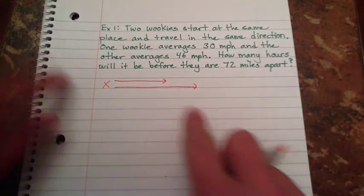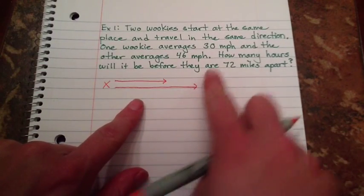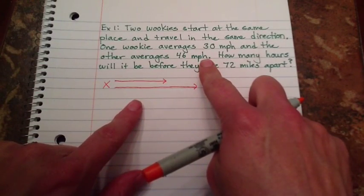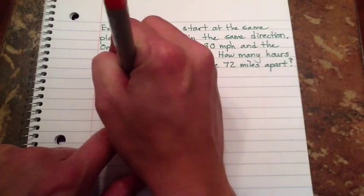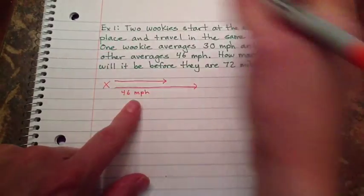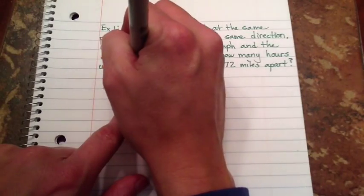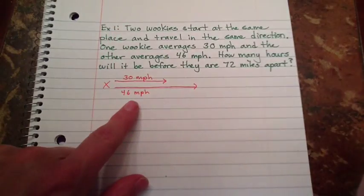Now I drew one of mine further, and the reason I drew one further is because one is traveling faster. So this one is traveling at 46 miles per hour. The slower one is traveling at 30 miles per hour.